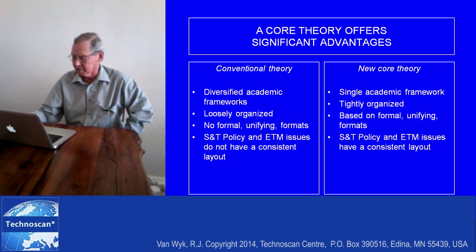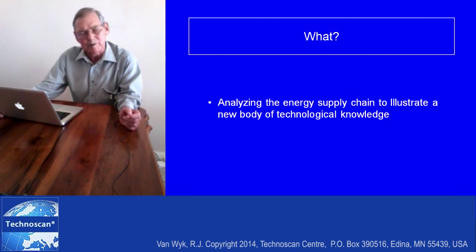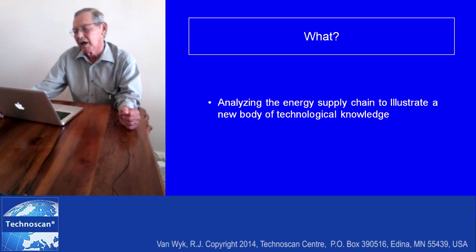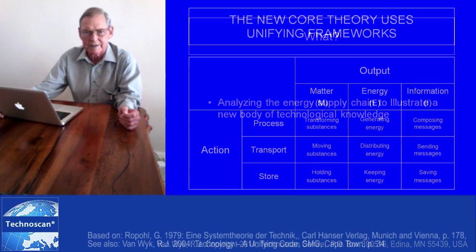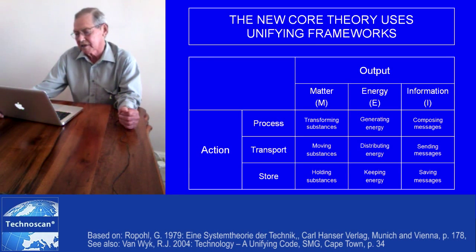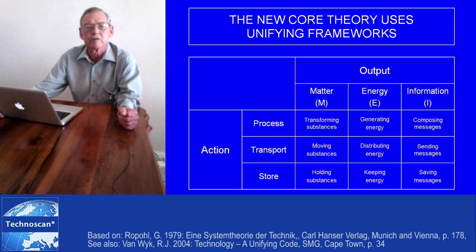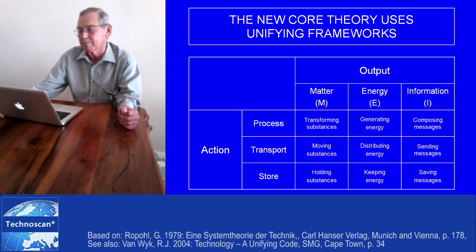To illustrate this, we will use the example of the energy supply chain. The format we use from the core theory of technology is the functionality grid. The functionality grid divides all technologies into nine major categories, defined in terms of the outputs — matter, energy, and information.